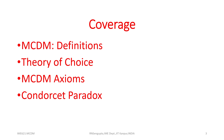The coverage for this sixth lecture, which is the first lecture in the second week, would be about the definitions of MCDM, the simple concept of theory of choice, the different axioms of MCDM — we will consider them in more detail and later examples will highlight that — and we will also consider the Condorcet paradox and corresponding examples.